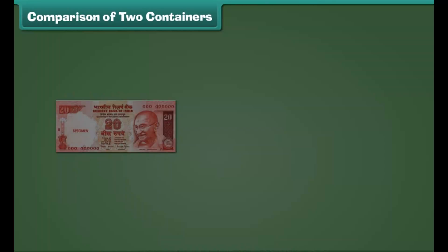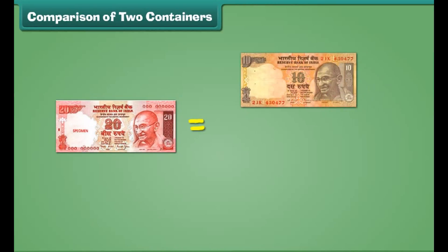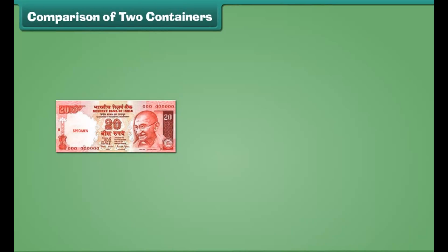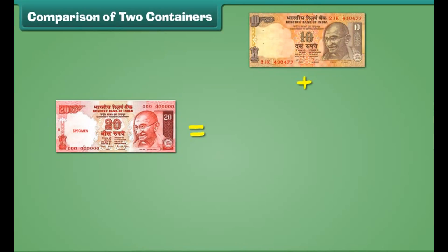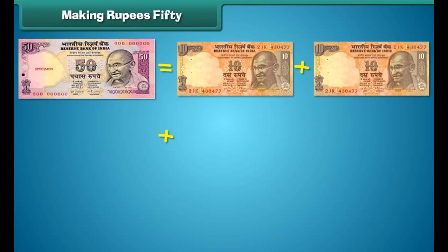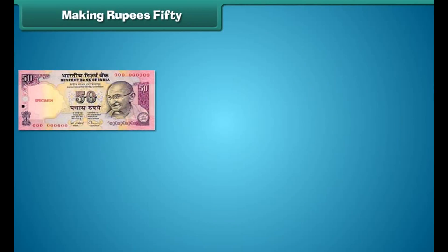This is a 20 rupee note. A 20 rupees note is equal to the sum of 4 five rupees notes. A 20 rupees note is equal to the sum of 2 ten rupee notes. A 20 rupees note is also equal to the sum of 1 ten rupee note and 2 five rupees notes.